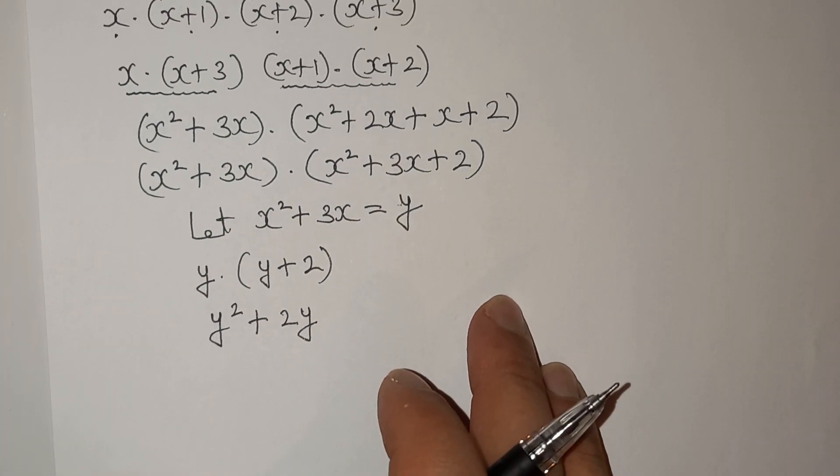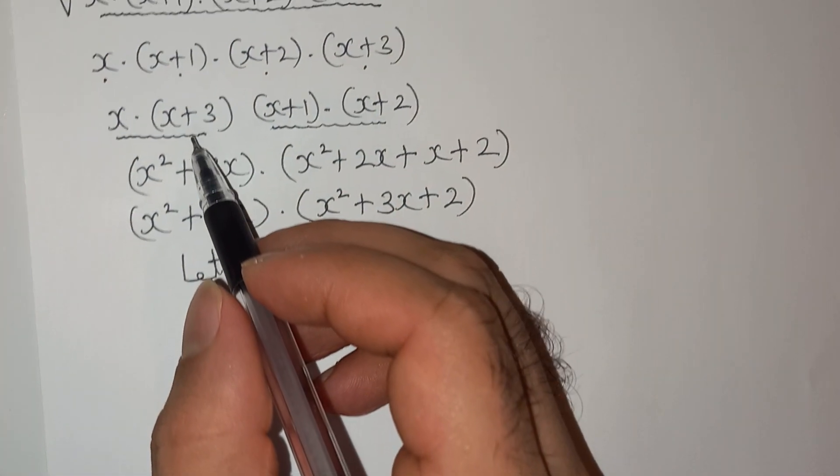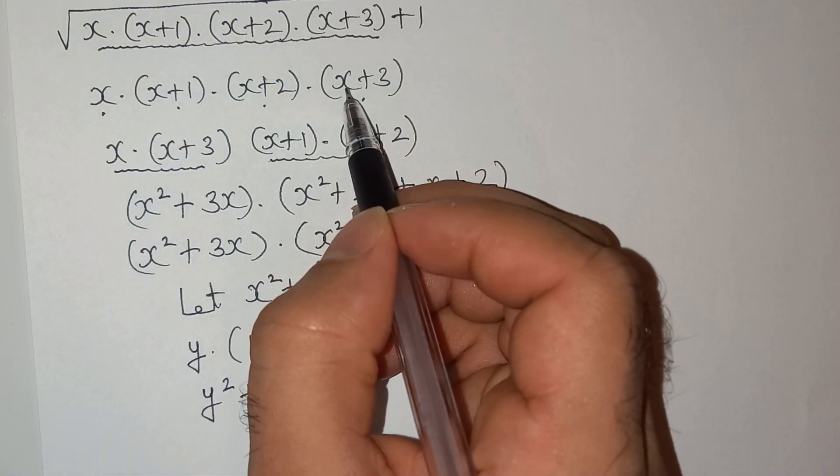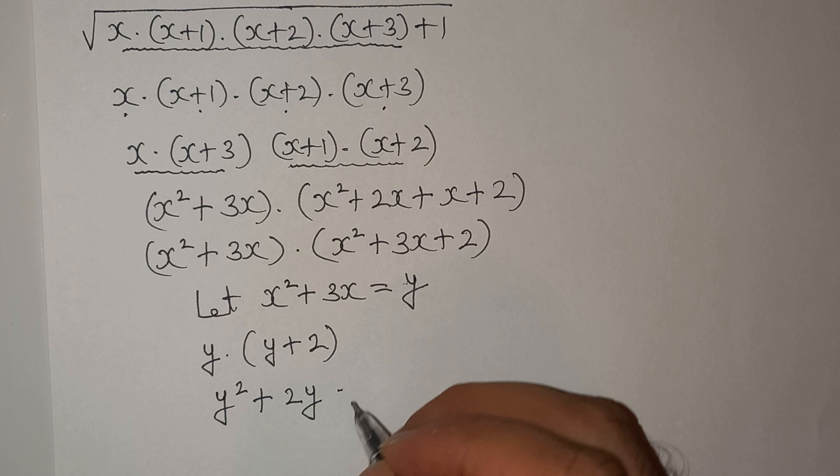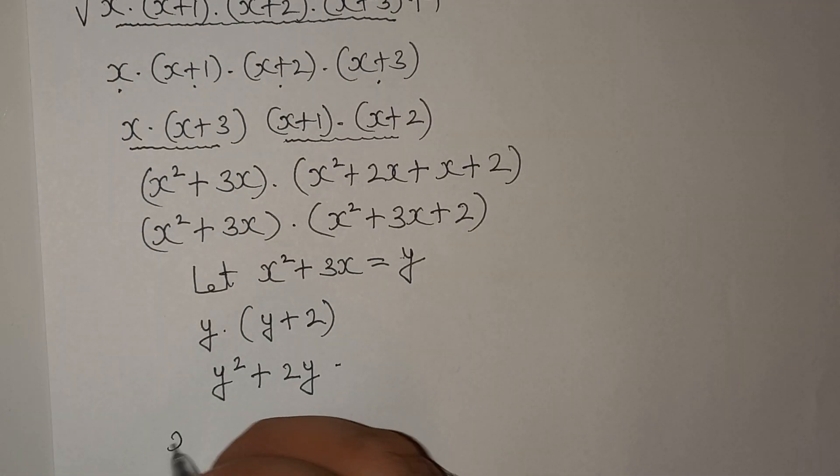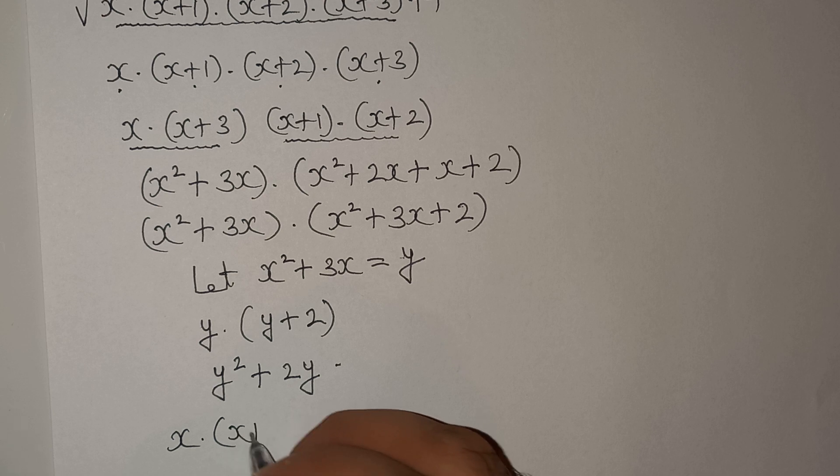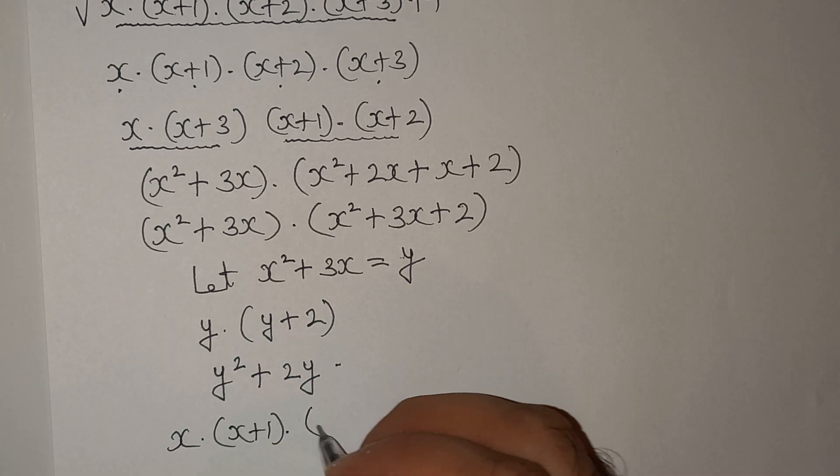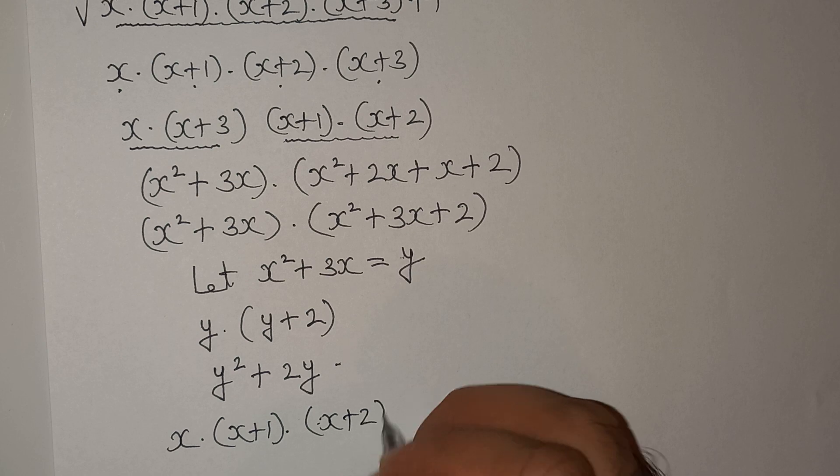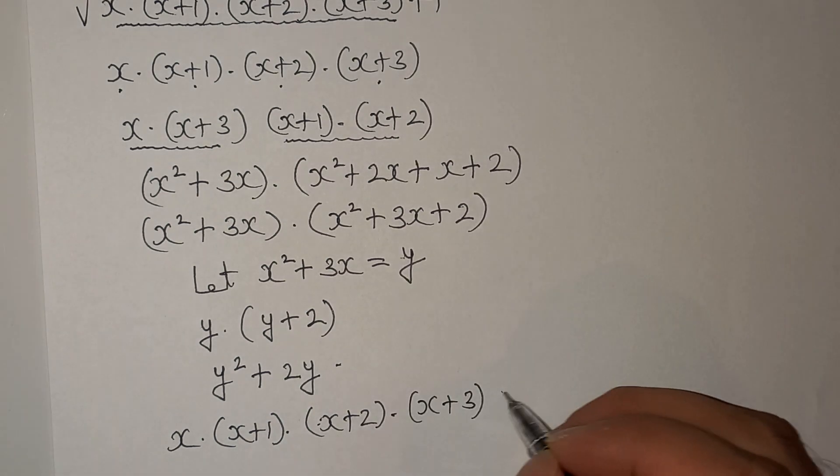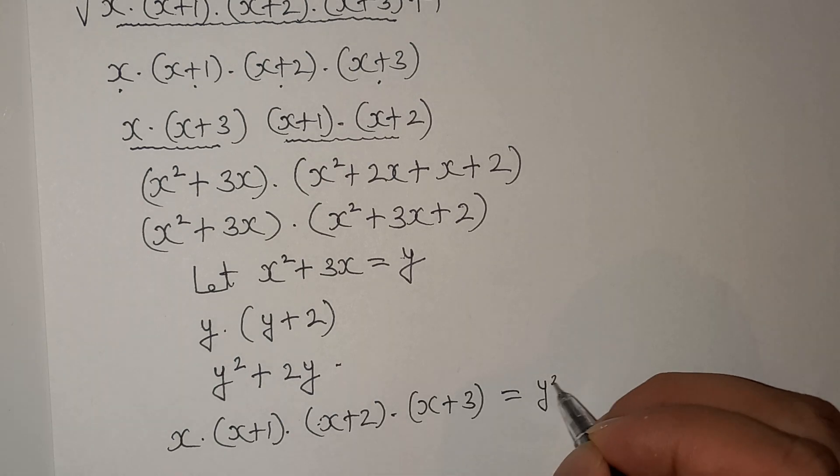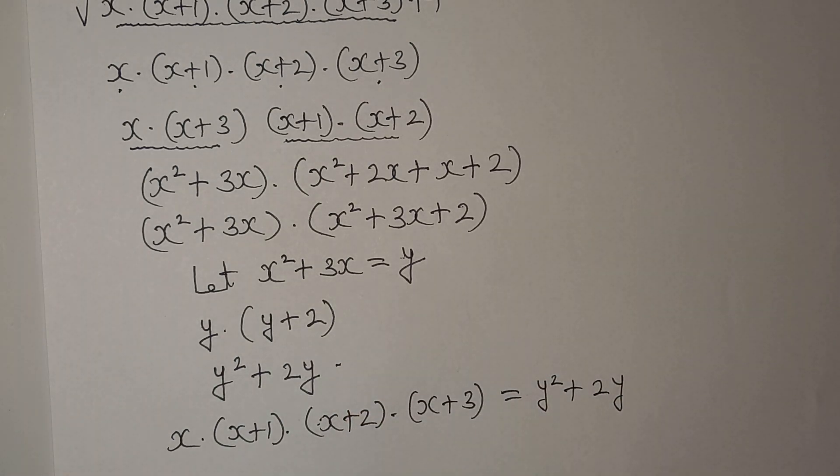Let's recall what we were calculating. We were calculating this expression. So we can write this as x(x+1)(x+2)(x+3) equals to y² + 2y.